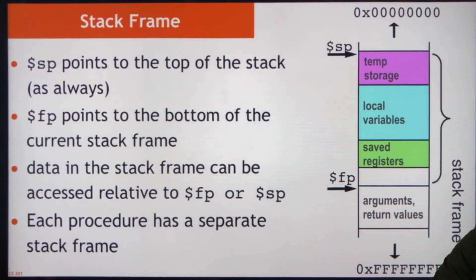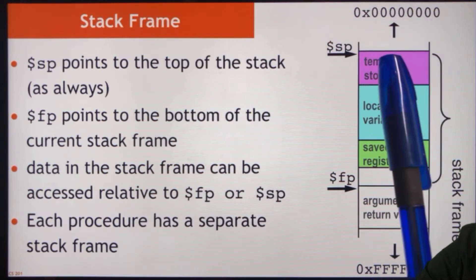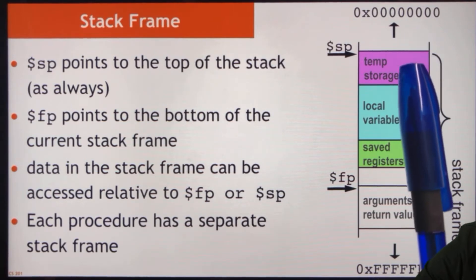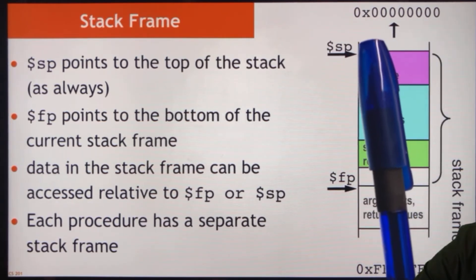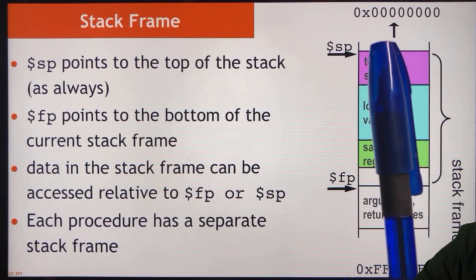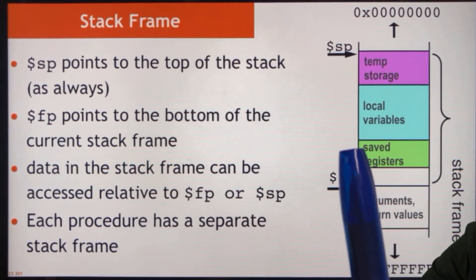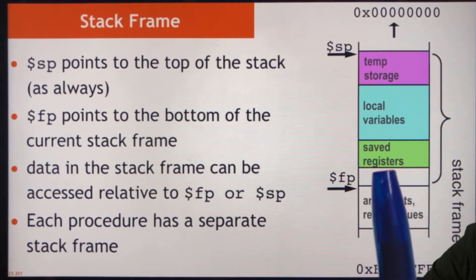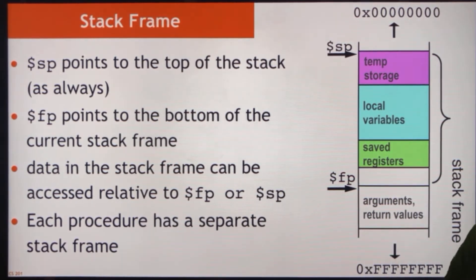The standard way of doing this is to have the stack pointer always pointing at the top of the stack. Within the context of a single procedure, we might use the stack for temporary storage. Below that is going to be local variables, then below that saved registers, then below that is the context for the switch itself, and then below that are arguments and return values.